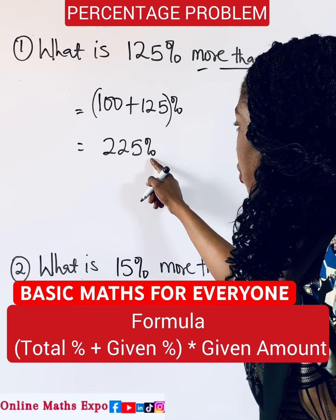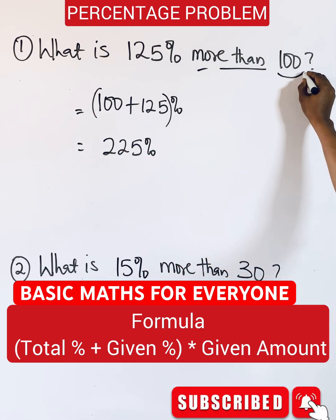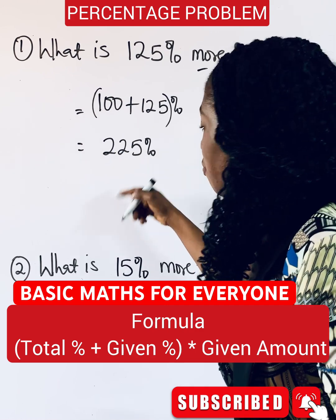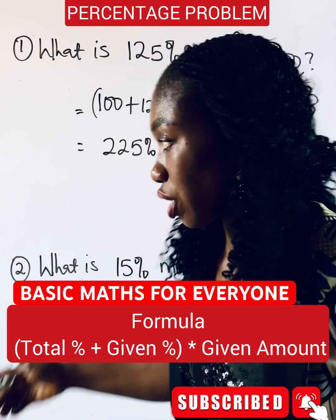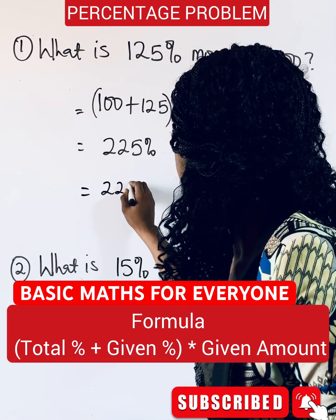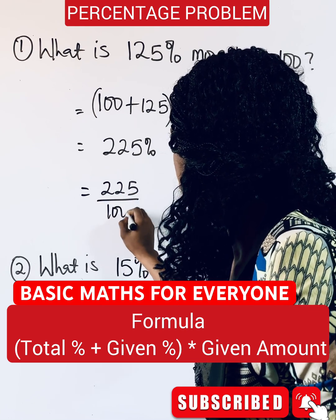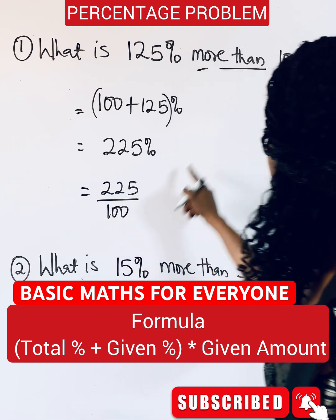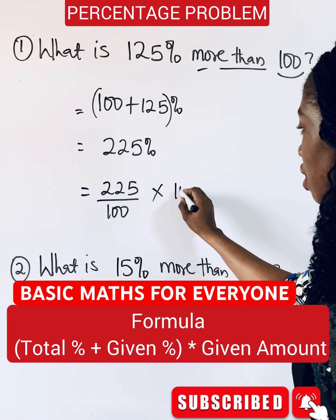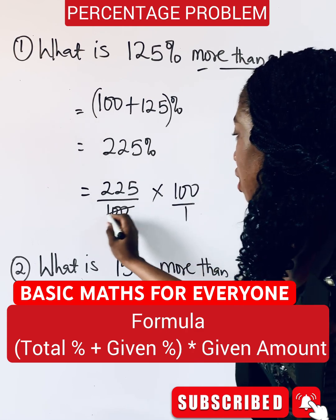So you are going to do 225 percent of this value you have here. And 225 percent as a fraction of 100 means 225 divided by 100, then multiply it with what you have here. Did you see that?